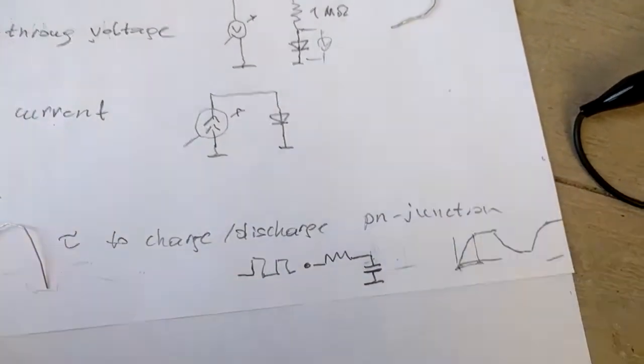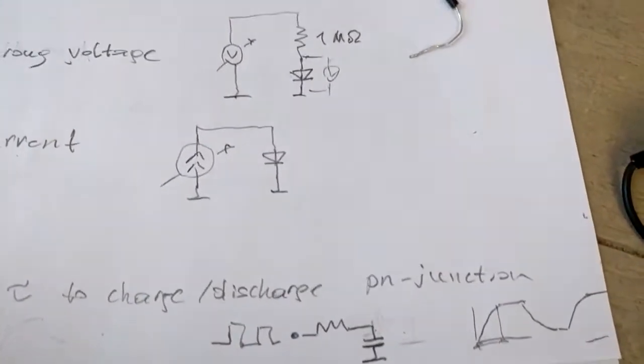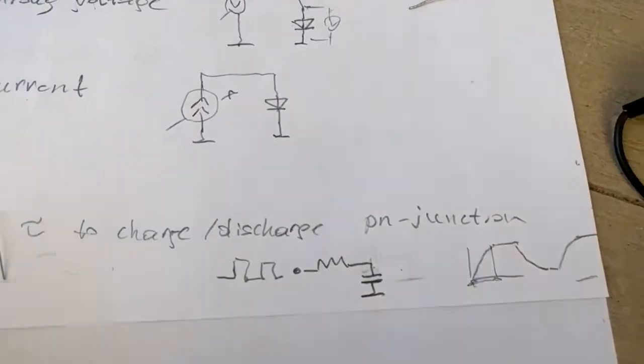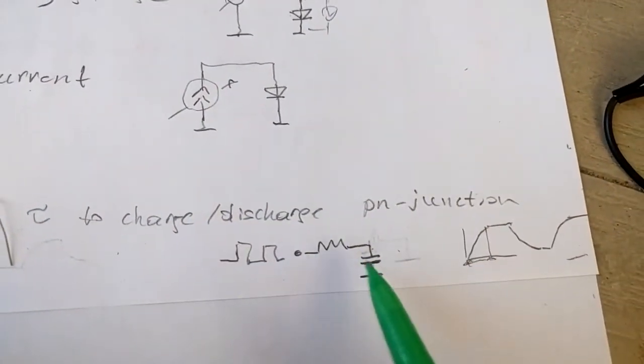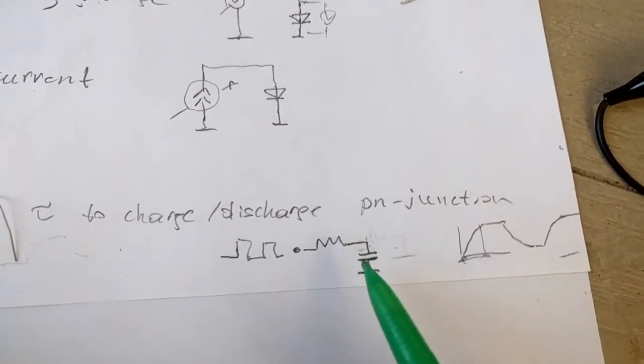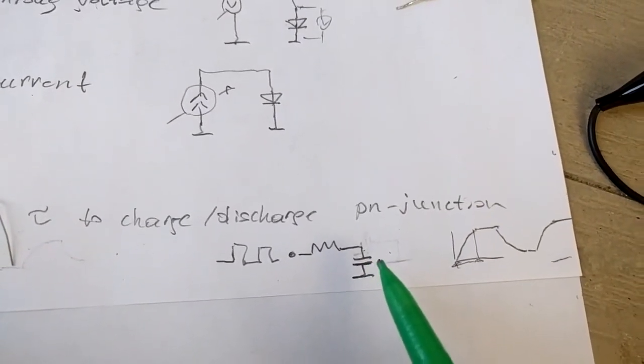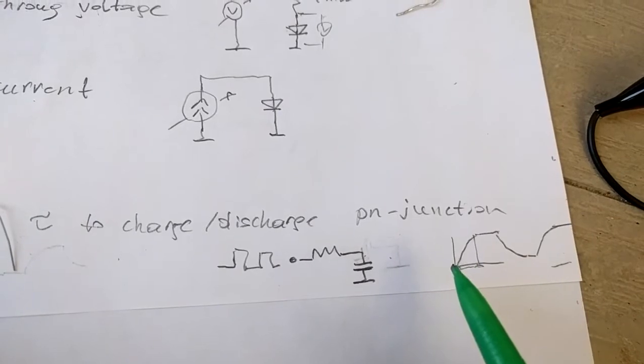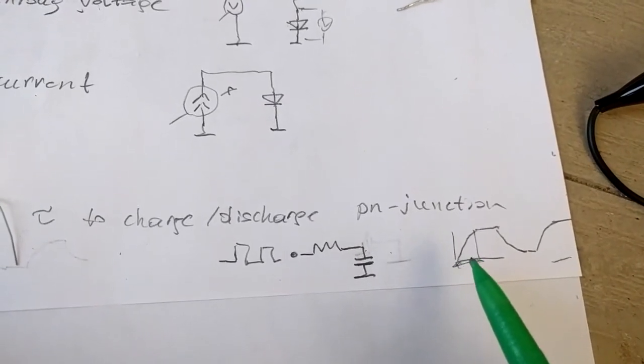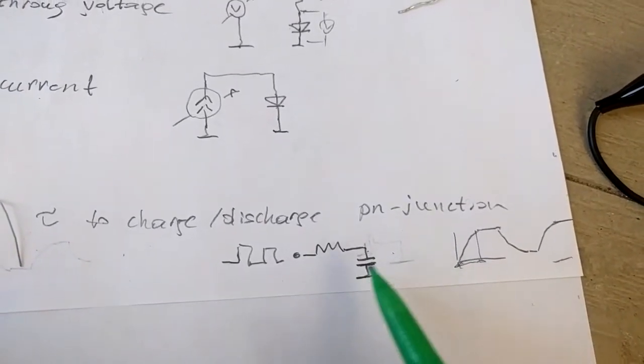And then I can estimate the RC from the RC constant. So multiplying the resistor value by the capacitance. We will get the time constant, but we know the time constant, so we can derive the capacitance.